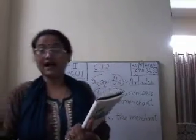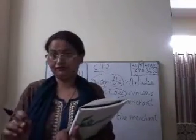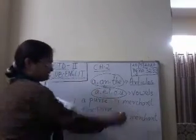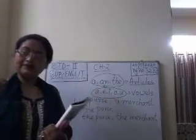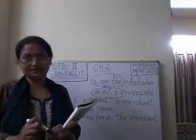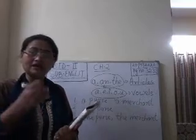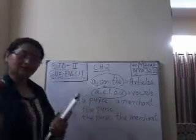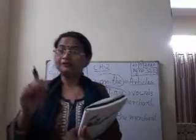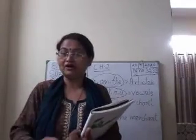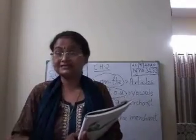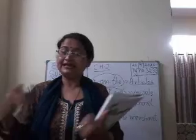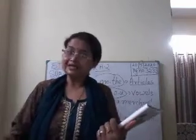Now children, see — a merchant. We are not sure of who is the merchant; the merchant's name was not written. So we have written 'a merchant'. A merchant lost a purse — this 'a merchant' and 'a purse' because here we are not particularly mentioning the name of the merchant or which purse. We are not definite about this. It may be any merchant, any purse.